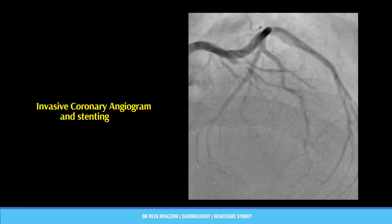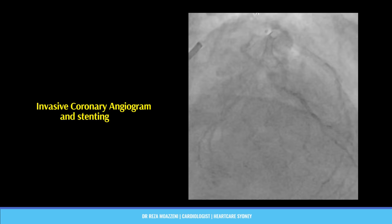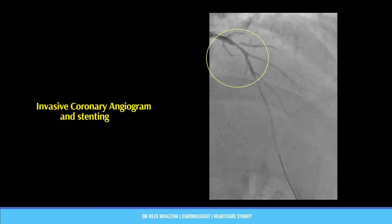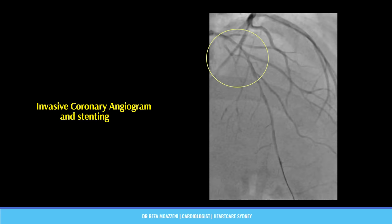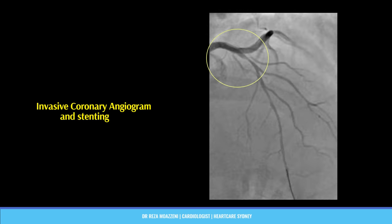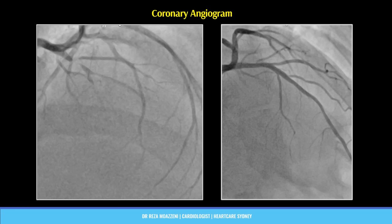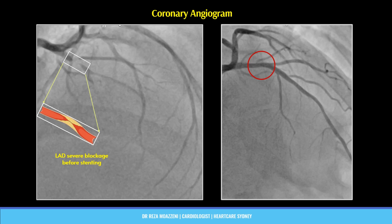He underwent a coronary angiogram at the hospital, which once again revealed the severe near occlusion of the LAD artery. The blockage was successfully opened with a stent. These still images of his invasive angiogram before and after stenting show that the blockage was so severe the artery was hardly visible. After angioplasty, you can appreciate the large size of the artery, which supplies a significant area of the heart. He was just days away from a complete occlusion and a massive heart attack. Ironically, during those days, he was undergoing the wrong test, which gave him misleading and reassuring results.